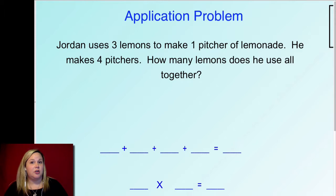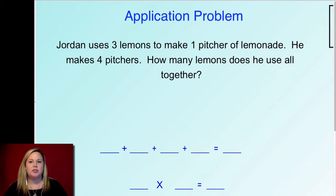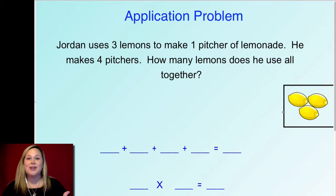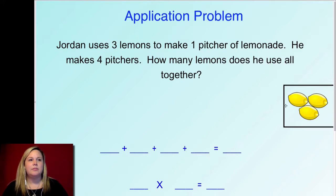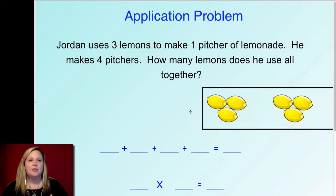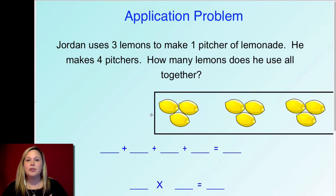What I would do is draw a picture. If you want, you can take out your dry erase board and draw a picture along with me, or you can just follow along as I illustrate this. Remember, there are three lemons in one pitcher. So there's one pitcher — they made four pitchers, so I have to keep going: there's my second pitcher with three in it, there's my third pitcher with three in it.